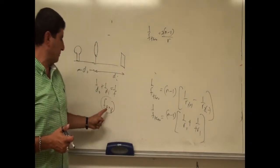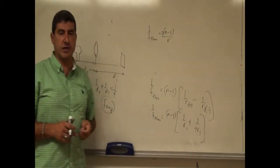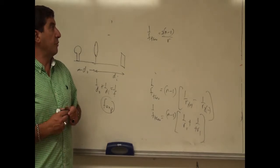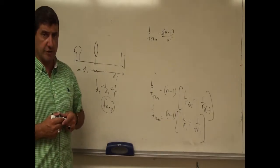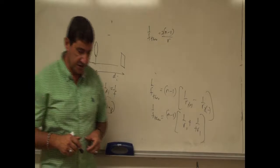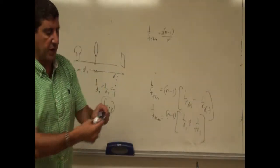We're going to measure the radius of curvature of just one side and use that to calculate F theoretical. Then we'll compare F experimental to F theoretical. In order to calculate the radius of curvature, I'll use a tool called the spherometer.